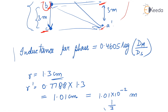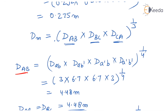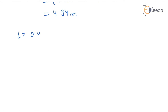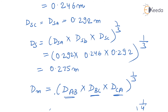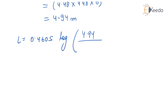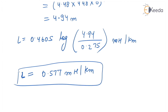Now put the values of Dm and Ds in the formula: inductance per phase per kilometre equals 0.4605 × log(Dm / Ds) mH per kilometre. This equals 0.4605 × log(4.94 / 0.275) mH per kilometre. On calculating this we get 0.577 mH per kilometre. So the inductance per phase per kilometre is equal to 0.577 mH per kilometre.